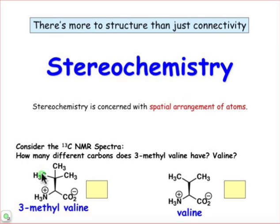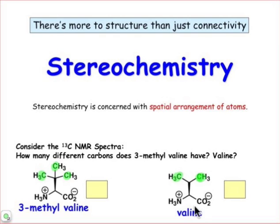What you will learn if you look at the answer is that there's nothing surprising about 3-methylvaline — the bottom line is that those three methyl groups in 3-methylvaline are equivalent to one another. But in the case of valine, you're going to learn that those methyl groups are not the same. Even though they have the same bonding connectivity, there is something about their stereochemical environment that makes them different, and we'll eventually learn that.